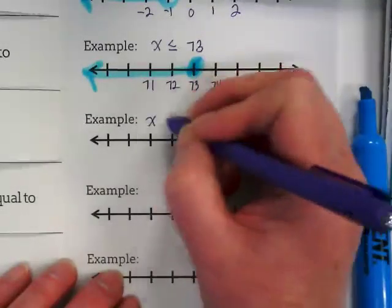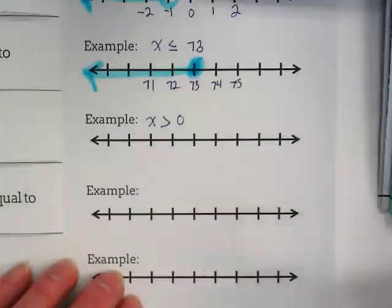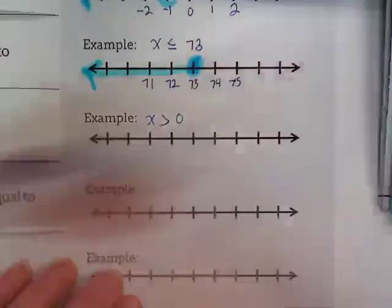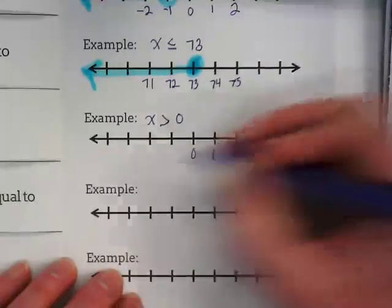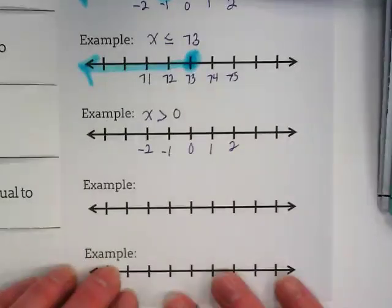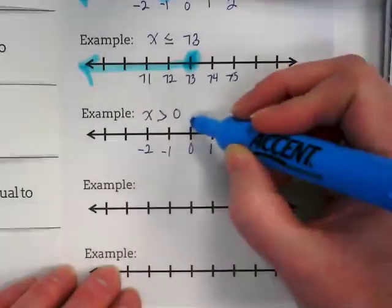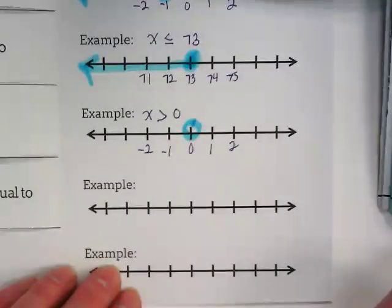So for greater than, we're going to do X is greater than zero. I like to put three to five numbers on my graphs when I'm doing the inequalities. You don't have to put a ton. What are we going to circle this time? What are we doing with the circle? It's going to stay open. And where does the arrow go?